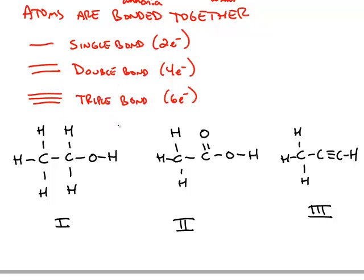Those are the three types of bonds we're going to look at: single, double, and triple bonds, where the number of electrons in the bond are two, four, or six.